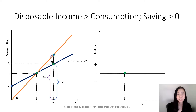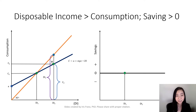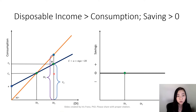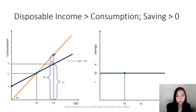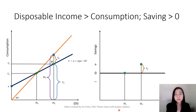Now, suppose you're on the right-hand side of the 45-degree line, meaning your disposable income is higher than your consumption. Here we can see our disposable income is DI2, but our consumption is only C2. So your saving is positive — in fact, your saving is exactly equal to that distance, which we call S2. So your saving is positive when your disposable income is DI2.